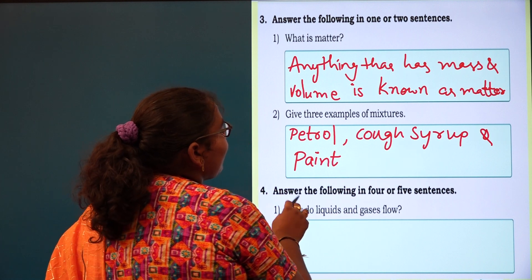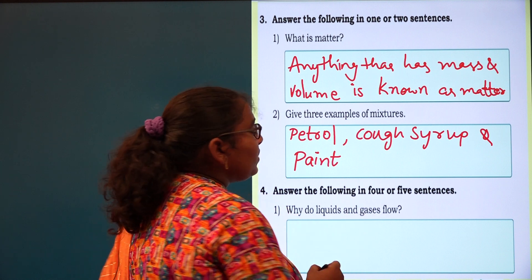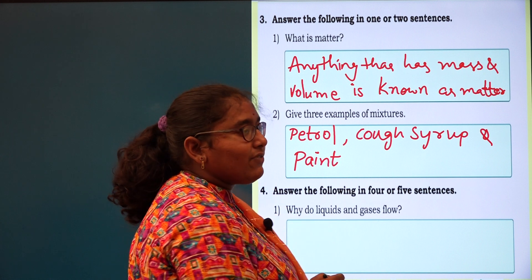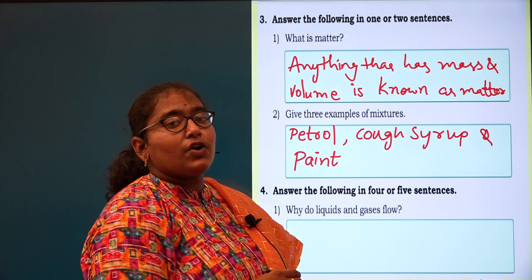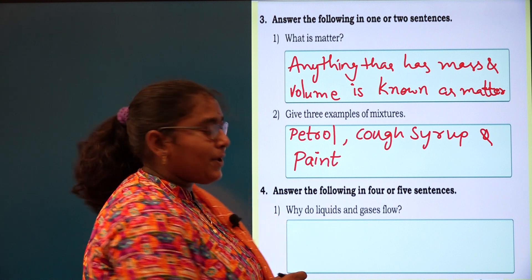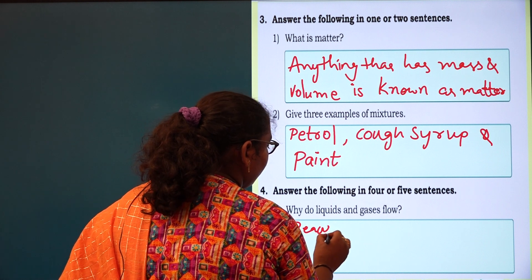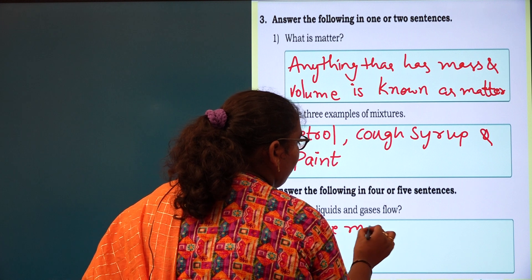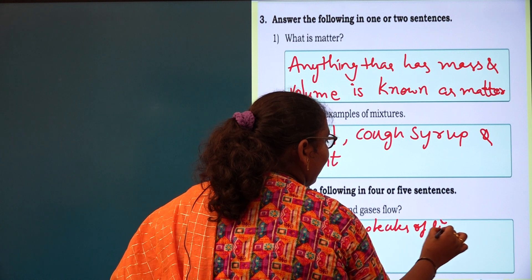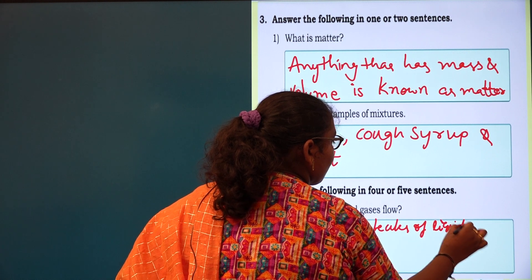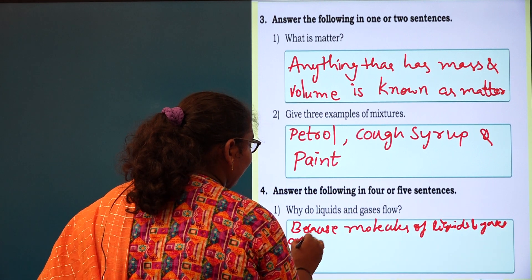And fourth one: answer the following in four or five sentences. First question: why do liquids and gases flow? Why they will flow? Because they are not packed very tightly. They do not have any fixed shape. Why they will flow? Because molecules of liquids and gases are not packed very tightly.